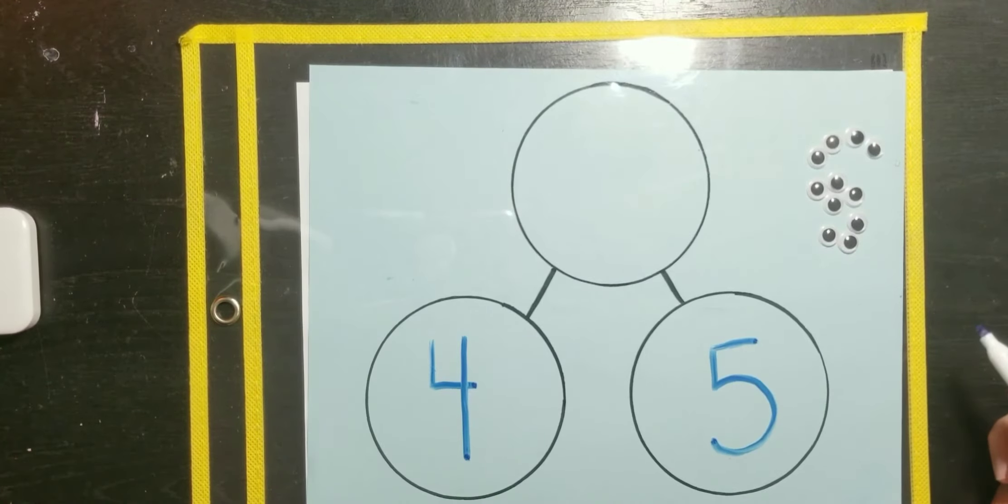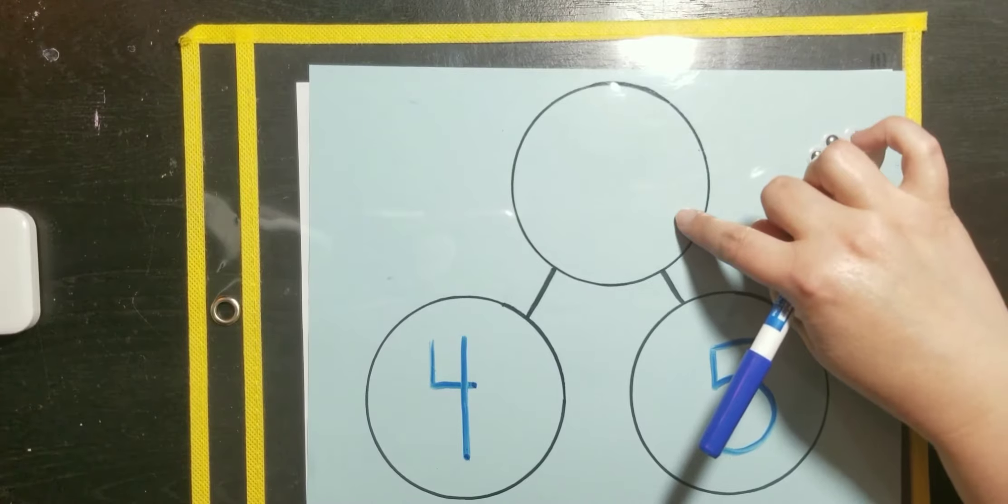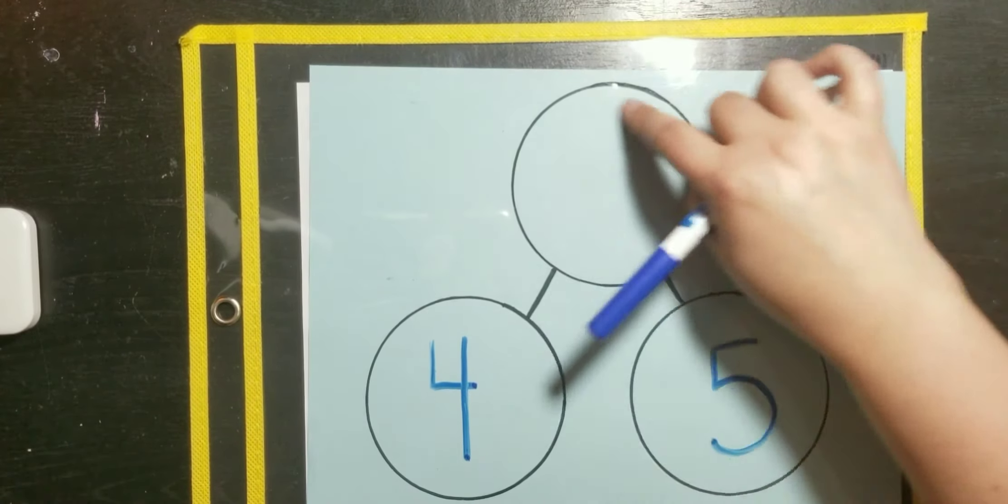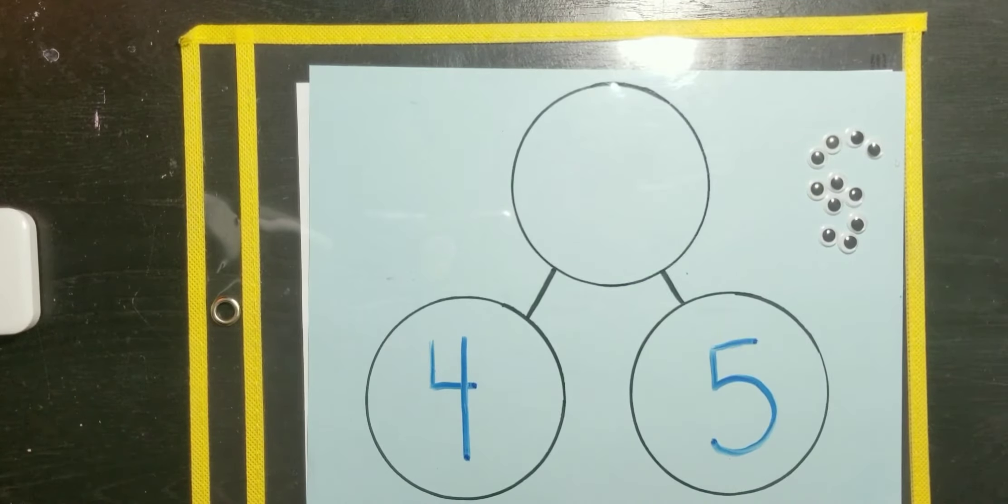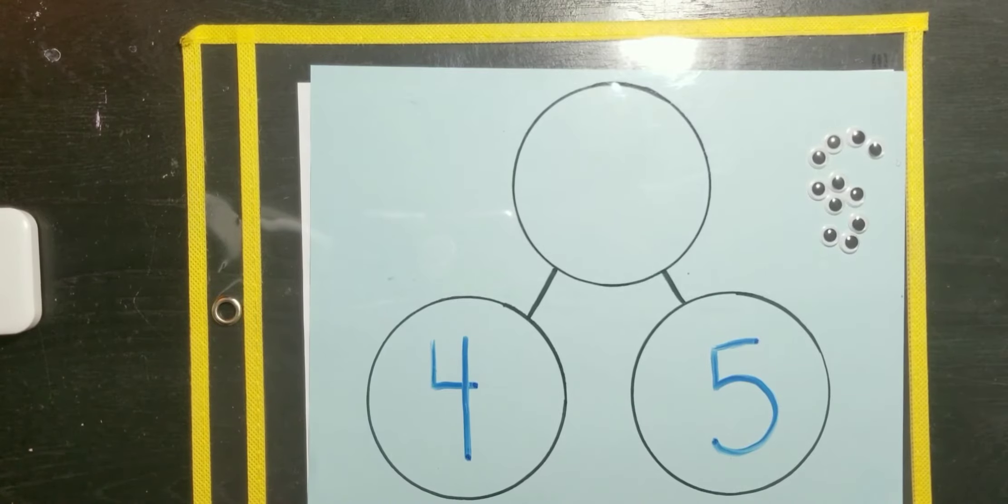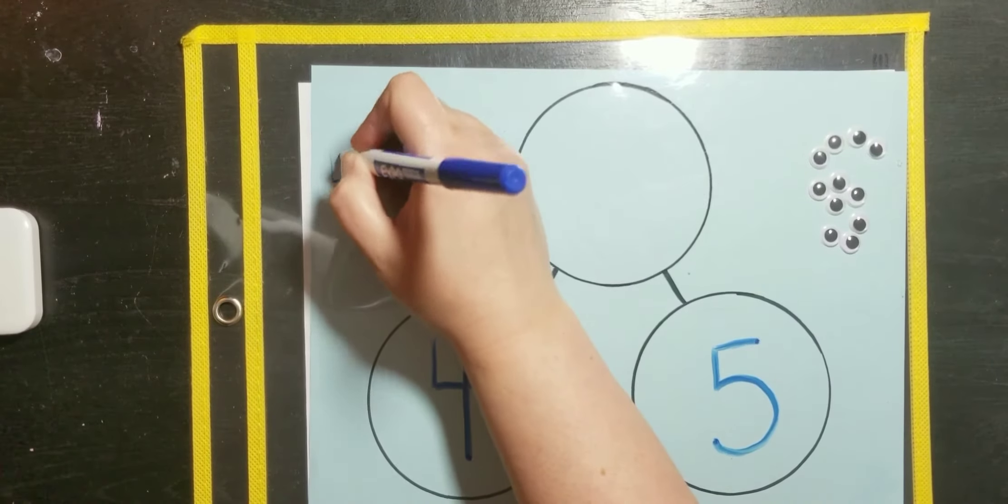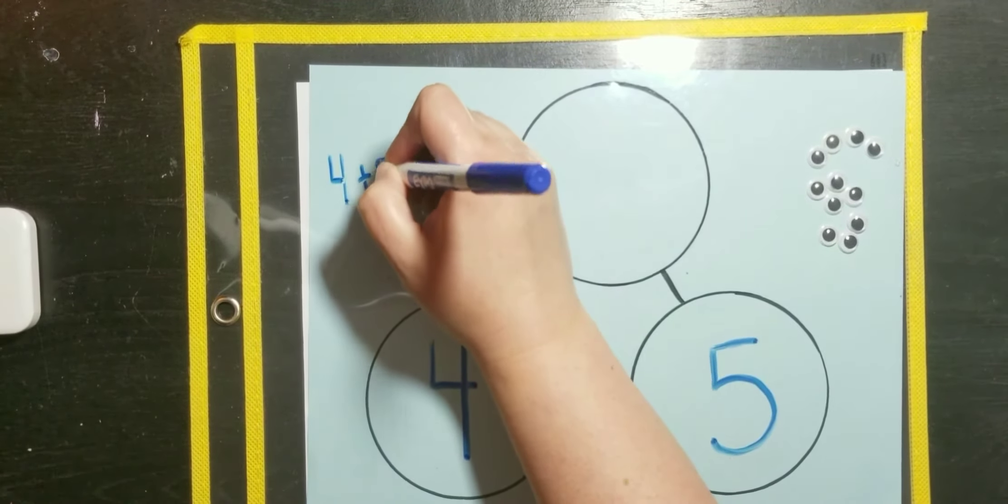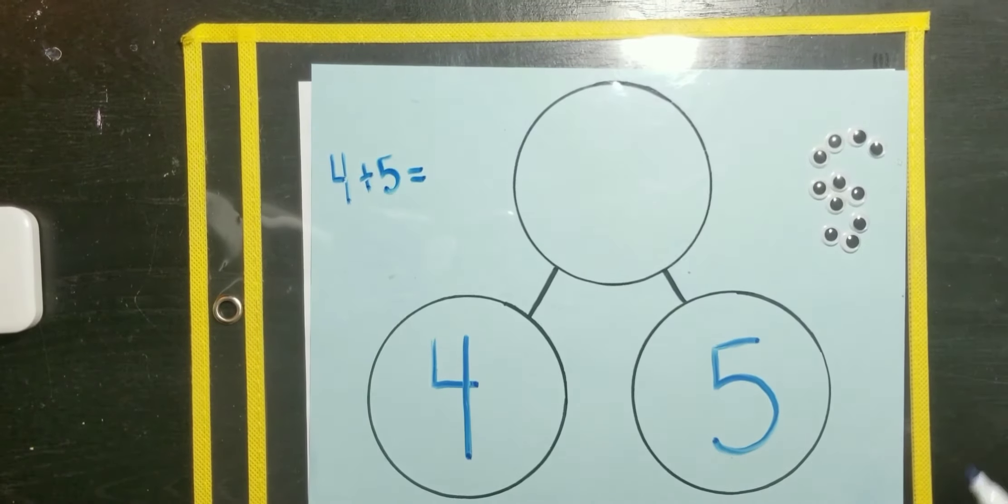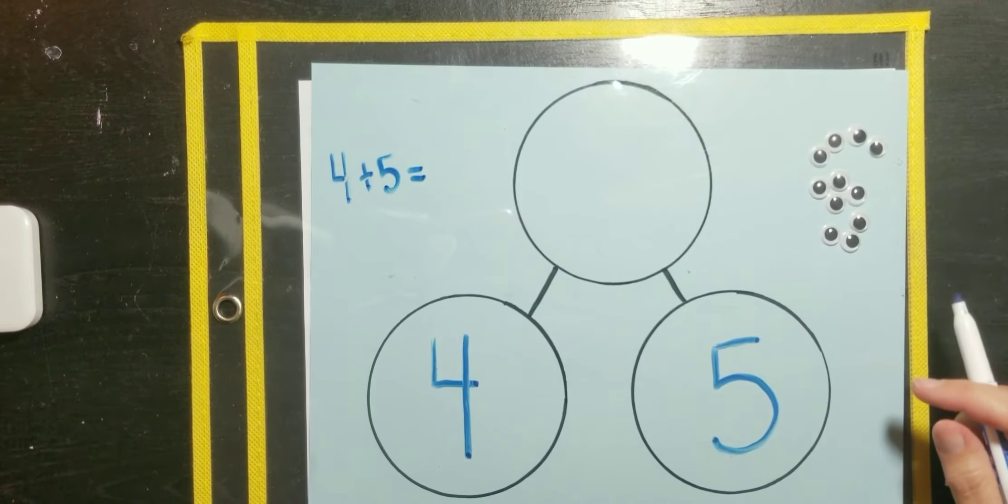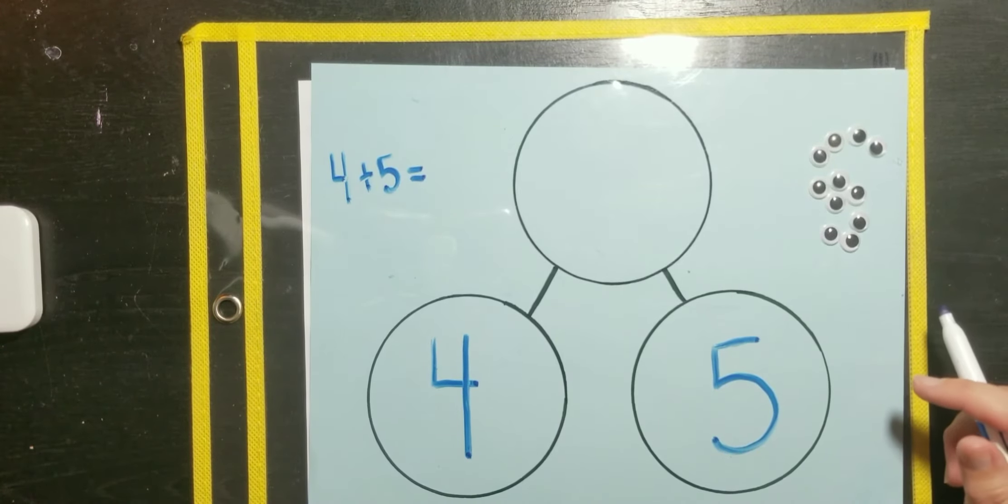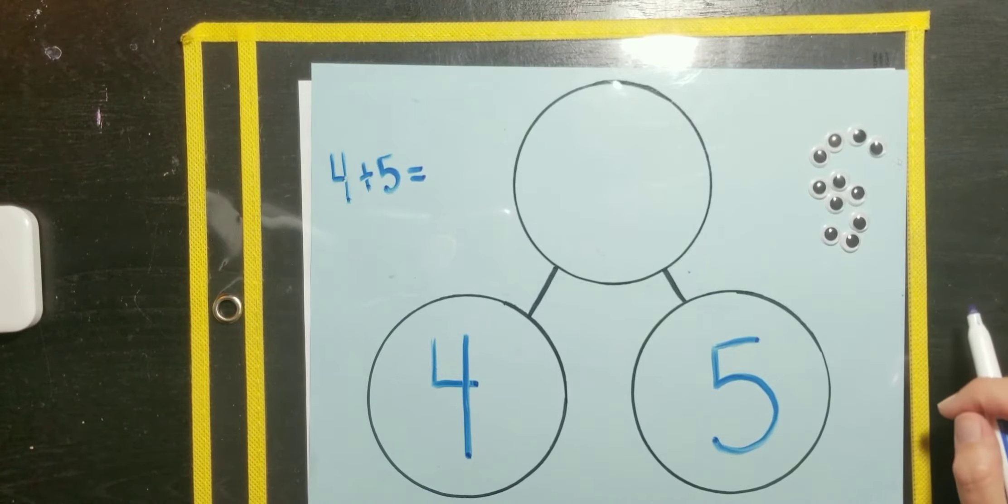Alright, so now our job is to figure out what number goes here in the whole of our number bond. So, our number sentence then is four plus five equals what? So, I'm going to write our number sentence here.